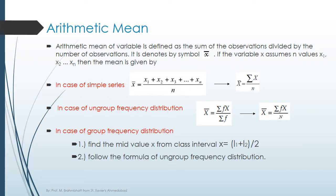Let's talk about arithmetic mean in detail. The arithmetic mean of a variable is defined as the sum of observations divided by the number of observations. It is denoted by symbol x bar. If the variable x assumes n values,